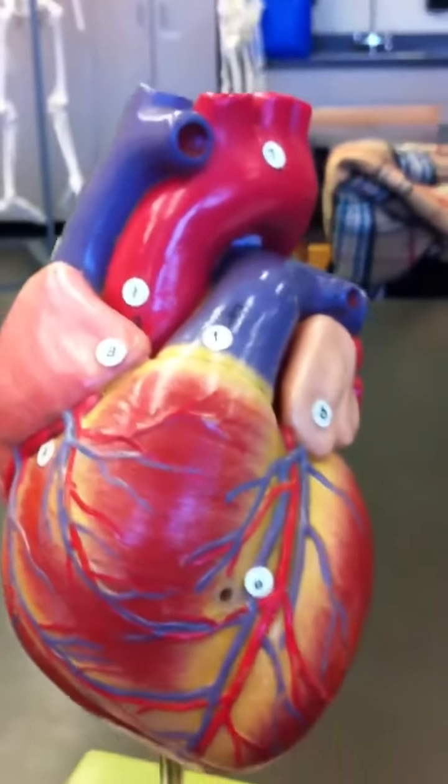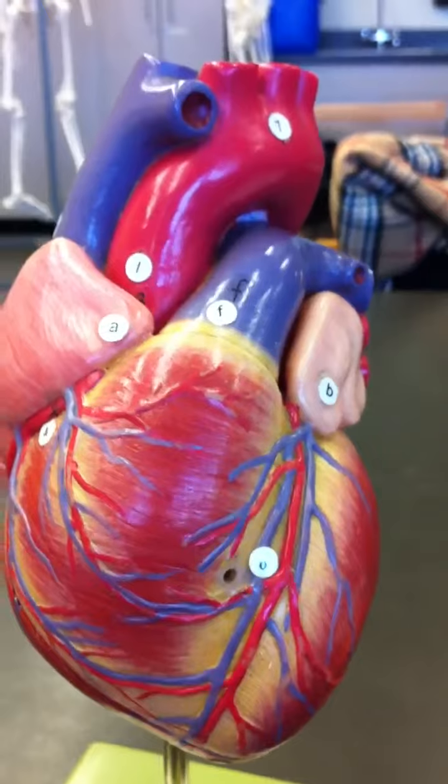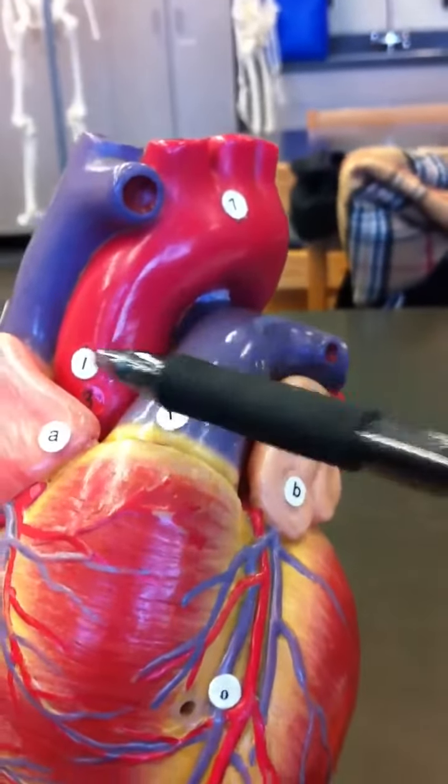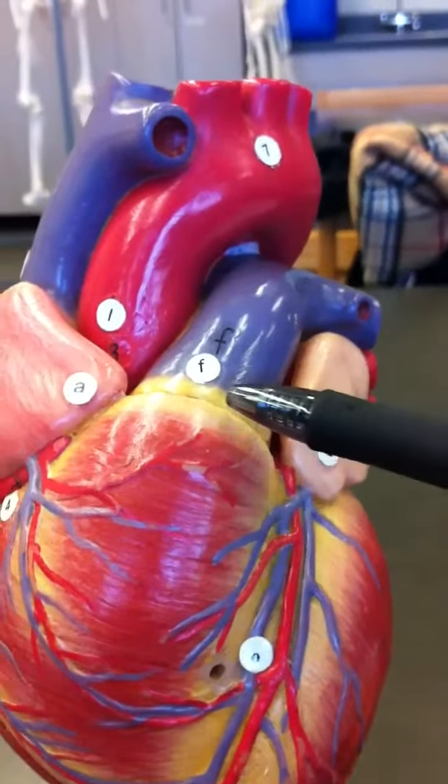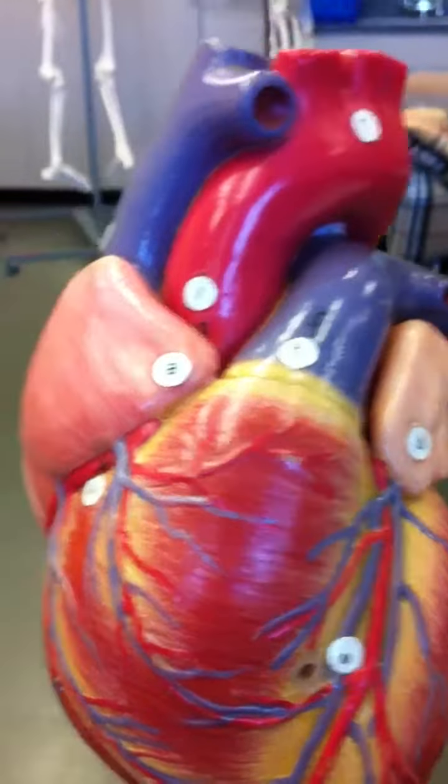Okay, we have the heart. Here's all the major exterior landmarks. We have the aorta, the pulmonary arteries, the superior vena cava, and then the inferior vena cava right there.